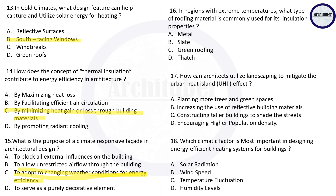Question sixteen: in regions with extreme temperature, what type of roofing material is commonly used for its insulating properties? The answer is metal, because it is a reflective material. Question seventeen: how can architects utilize landscaping to mitigate the urban heat island effect? The answer is by planting more trees and green spaces in the planning or design.